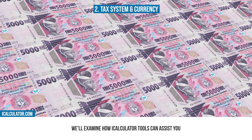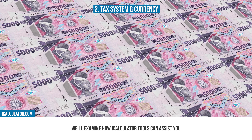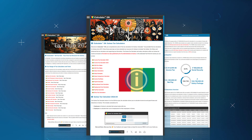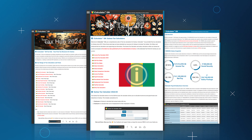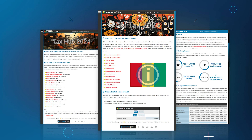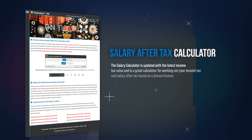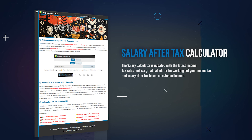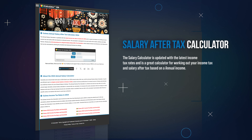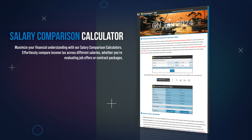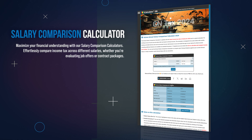Next, we'll examine how iCalculator tools can assist you in navigating the financial intricacies of Guinea. iCalculator is home to a comprehensive suite of different tools to simplify and clarify your financial planning and decision-making. You can start by understanding your take-home pay with our salary after-tax calculator, which offers a clear view of your net income after all tax deductions. Compare different salaries with our salary comparison calculator, providing insights into where your earnings stand compared to previous years.